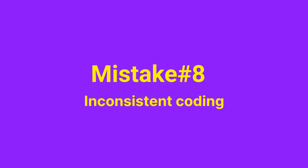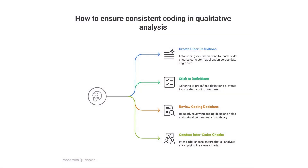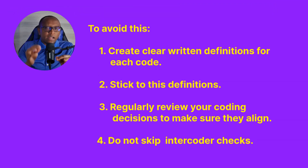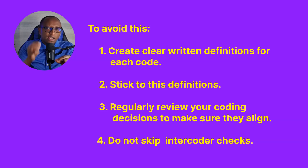Mistake number eight: inconsistent coding. This happens when you apply different logic or criteria to similar data segments — one day coding a quote under 'work stress' and the next day a nearly identical quote ends up under 'burnout' with no clear rules. The result is messy data, weak themes, and shaky findings. To avoid this, create clear written definitions for each code, stick to those definitions, regularly review your coding decisions, and if working with others, don't skip intercoder checks. Be consistent or your findings won't be.